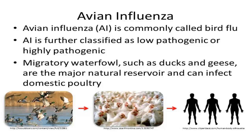The major natural reservoir for influenza A viruses is migratory waterfowl. This includes birds such as ducks and geese that are capable of traveling long distances. Waterfowl will harbor the influenza virus without showing signs of being sick and can spread the disease to domestic poultry during their migrations.